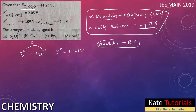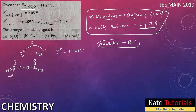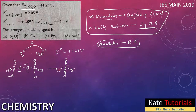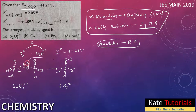Next, S2O8²⁻ converting to SO4²⁻ — you need to know the structure of S2O8²⁻. It contains a peroxide bond (O–O) where oxygen has oxidation state minus one. In SO4²⁻, oxygen has oxidation state minus two. So minus one converting to minus two is reduction. The standard reduction potential is +2.05 volts.